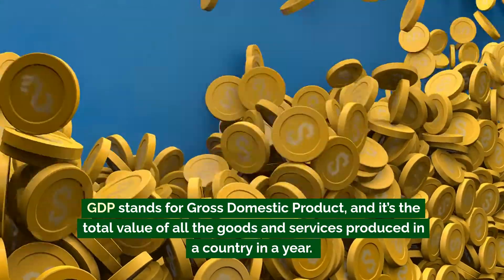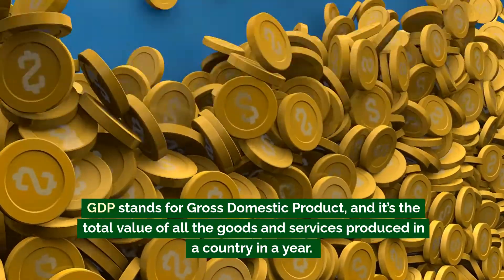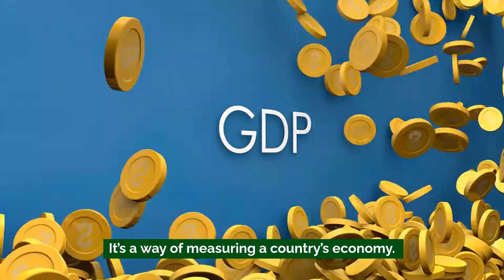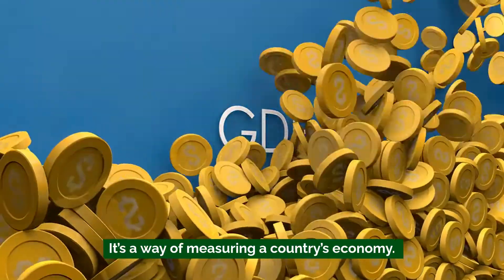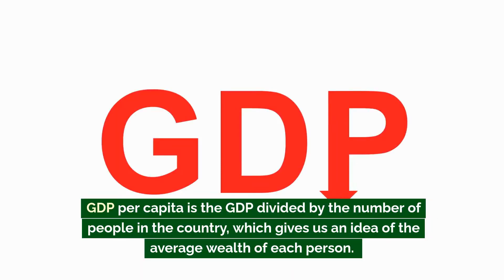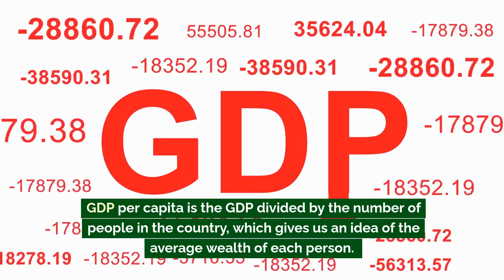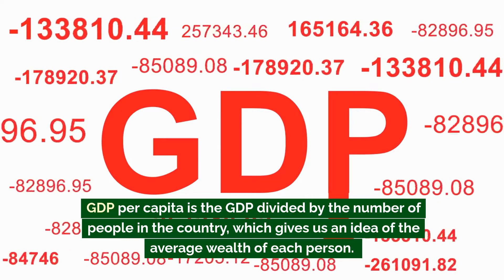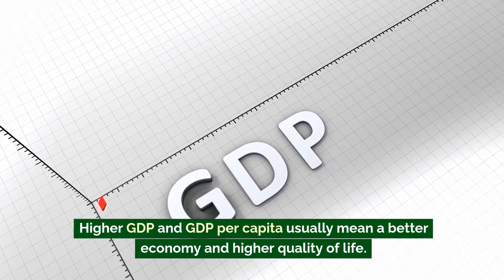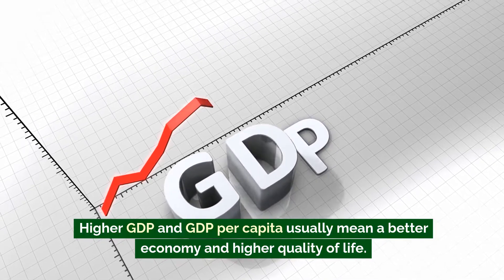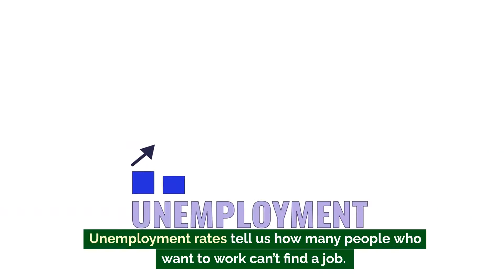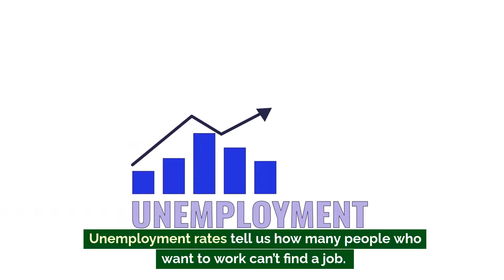GDP and GDP per capita are two more important indicators. GDP stands for gross domestic product, and it's the total value of all the goods and services produced in a country in a year — it's a way of measuring a country's economy. GDP per capita is the GDP divided by the number of people in the country, giving us an idea of the average wealth of each person. Higher GDP and GDP per capita usually mean a better economy and higher quality of life.